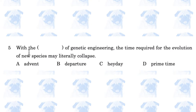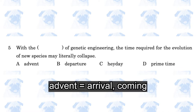With the blank of genetic engineering, the time required for the evolution of new species may literally collapse. The answer is A, advent. Advent is another word for arrival or coming. So, with the arrival of genetic engineering.